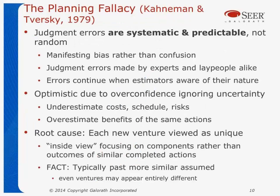If you look at the planning fallacy — this is part of the work that won the Nobel Prize — what they found is that judgment errors are systematic and predictable, not random. We can predict that people are going to make errors in judgment, that they're going to manifest bias — not just confusion — and that even the experts are going to make errors as well as lay people. Errors continue even when the estimators are aware of the nature of the errors. Even when we know that we make errors, we still have the bias.